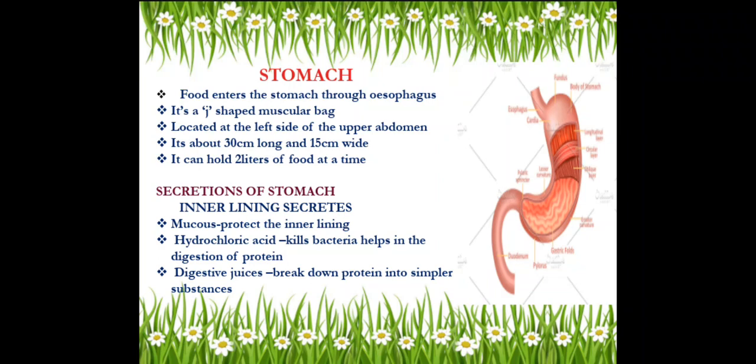Hello students, we are back to our lesson on nutrition in animals. I hope you all understood the previous session where we discussed the tongue, esophagus, and mouth. We were discussing the digestive system of the human body. As you all know, digestion of food starts from the mouth and ends at the anus. We discussed how digestion happens in the mouth and how food passes through the esophagus.